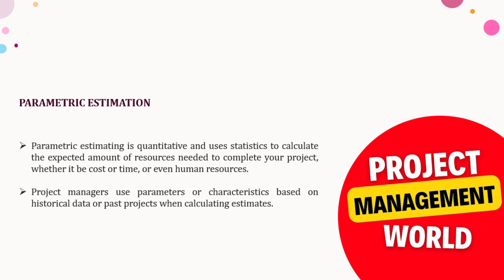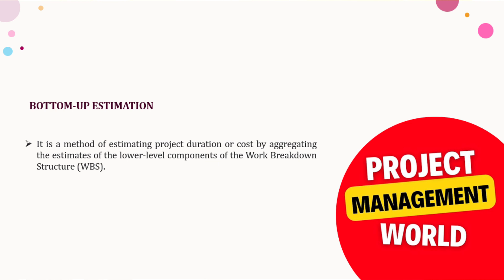Parametric estimation is a quantitative technique that uses statistics to calculate the expected amount of resources needed to complete a project. For example, if one excavator has a productivity of 100 cubic meters per hour, we can calculate how long it will take to excavate 10,000 cubic meters using a simple formula, and determine how many excavators are required to complete the job within a given time.